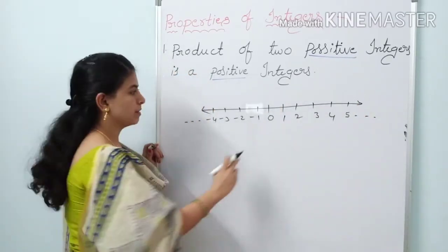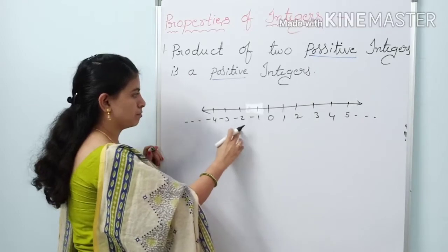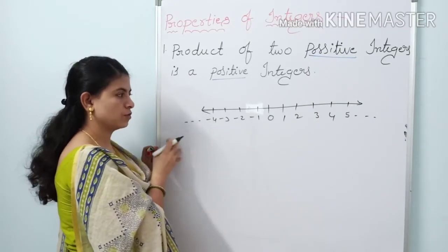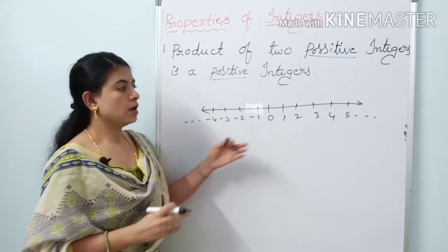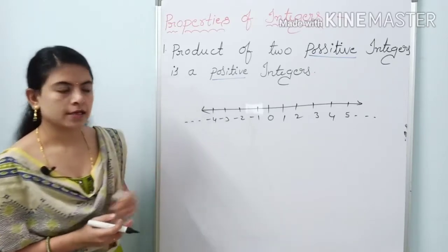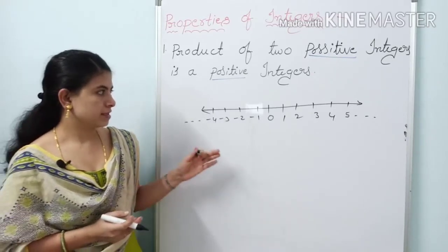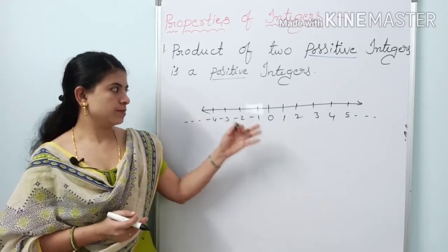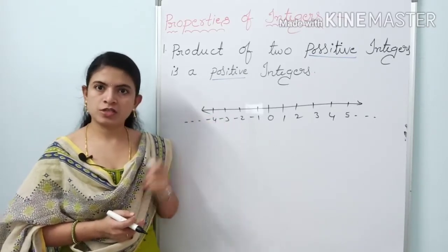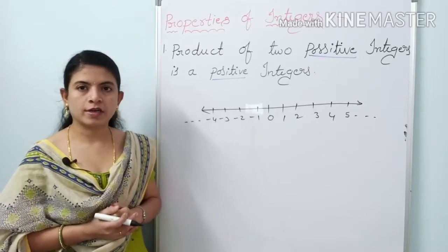Negative numbers are minus 1, minus 2, minus 3, minus 4 and so on, along with 0. So in the integer set, positive numbers, negative numbers, and 0 are all included.